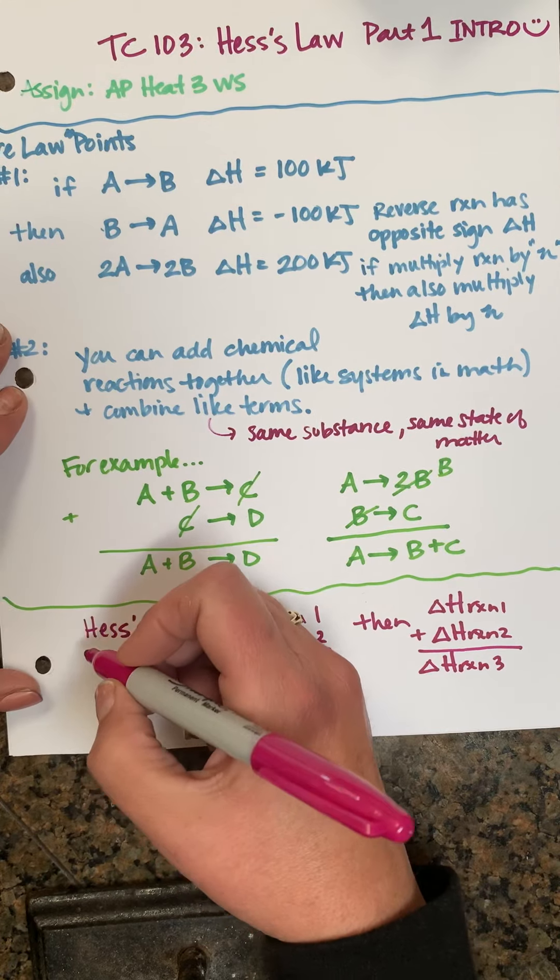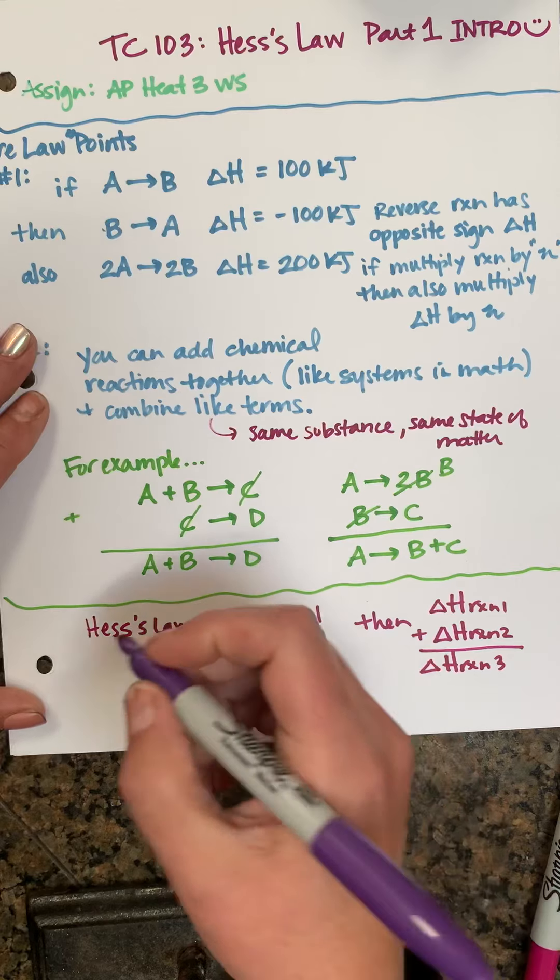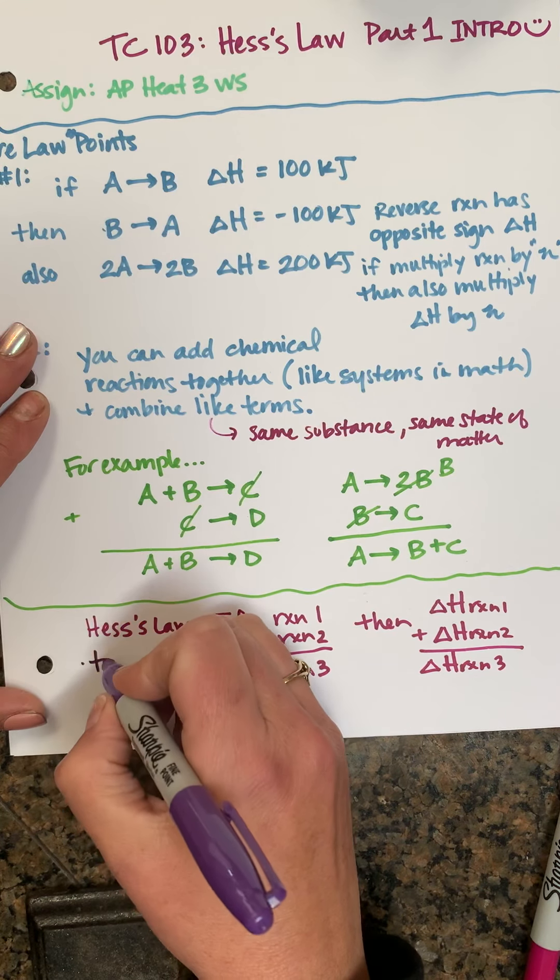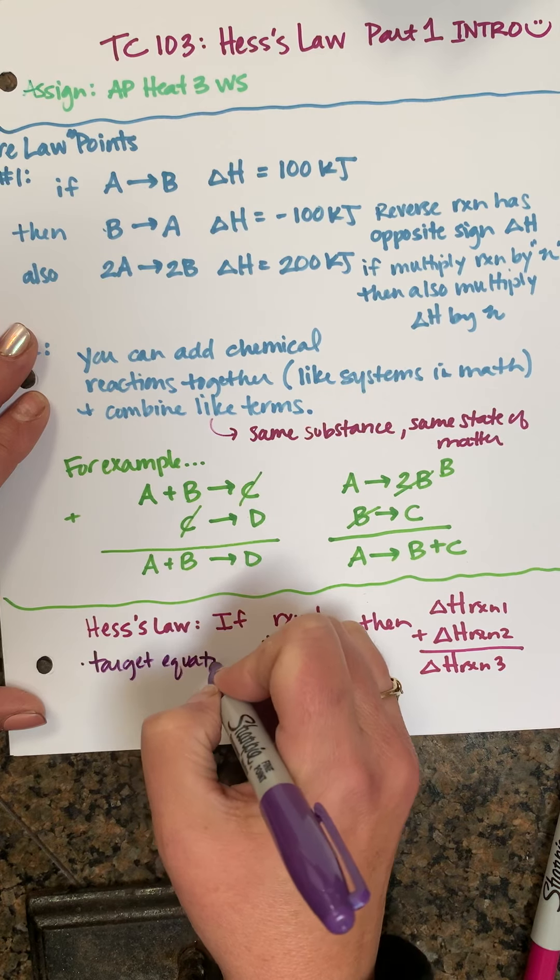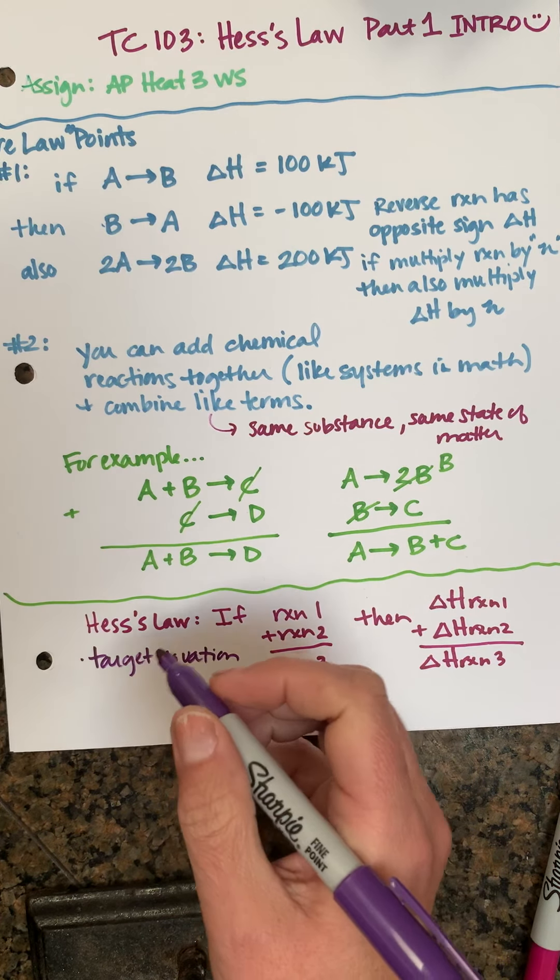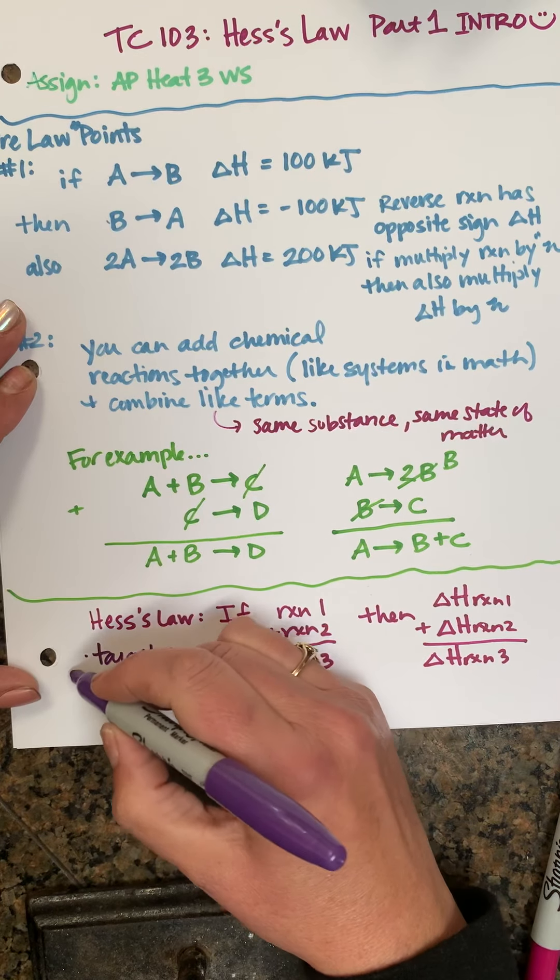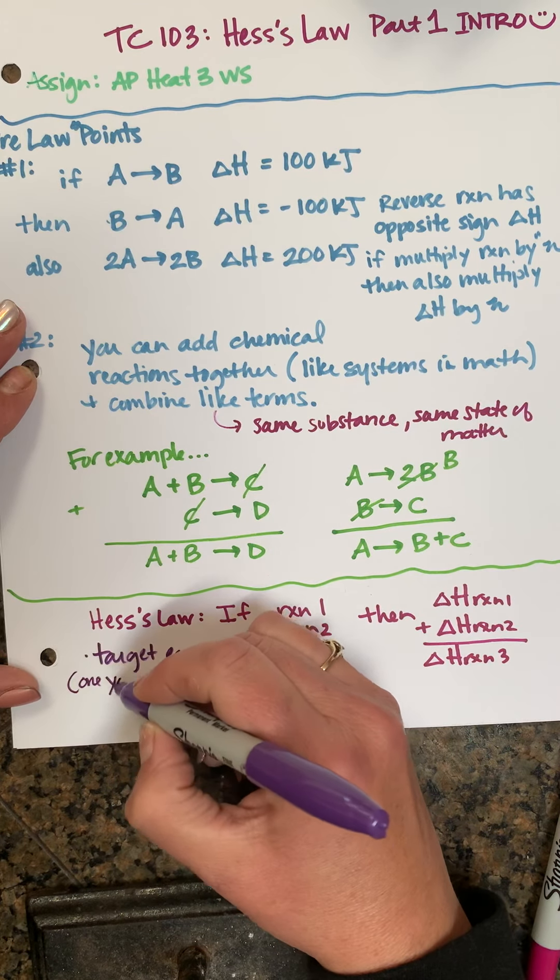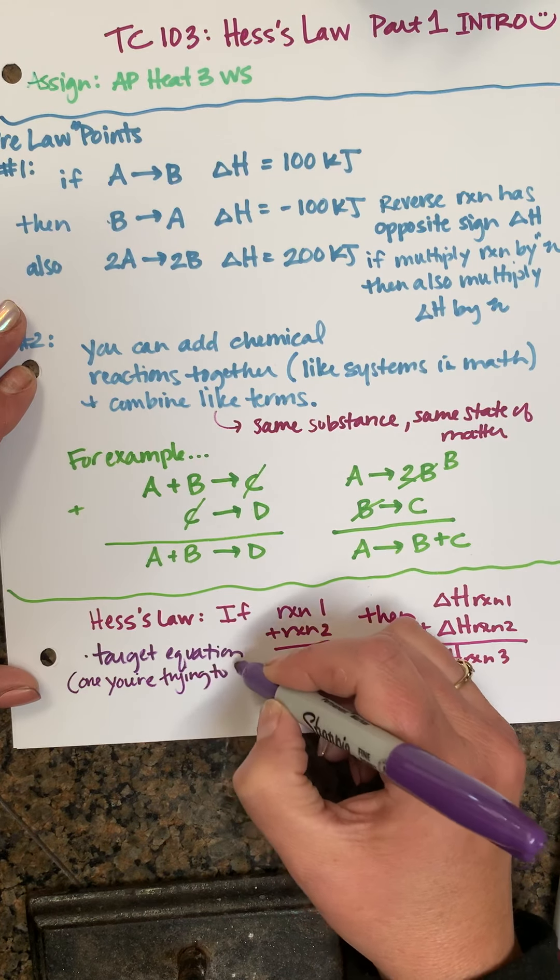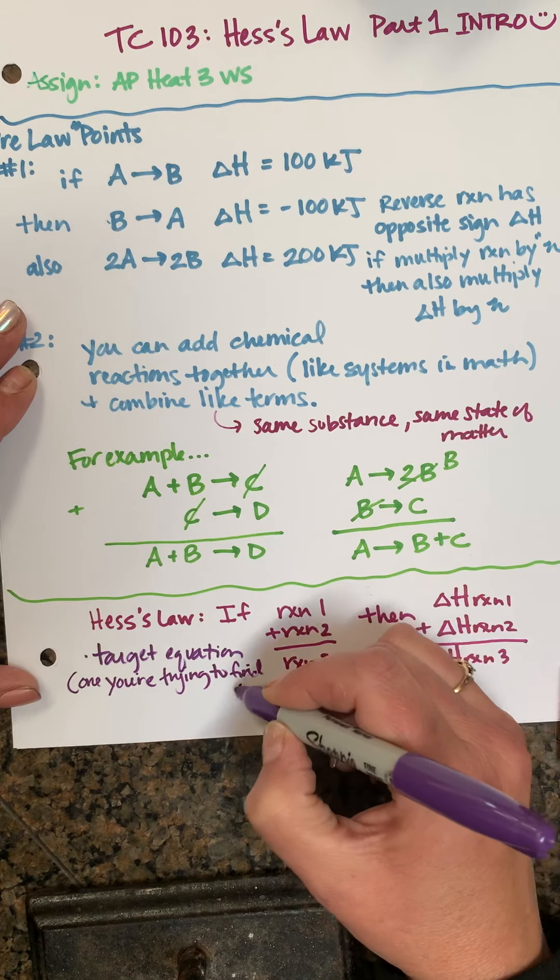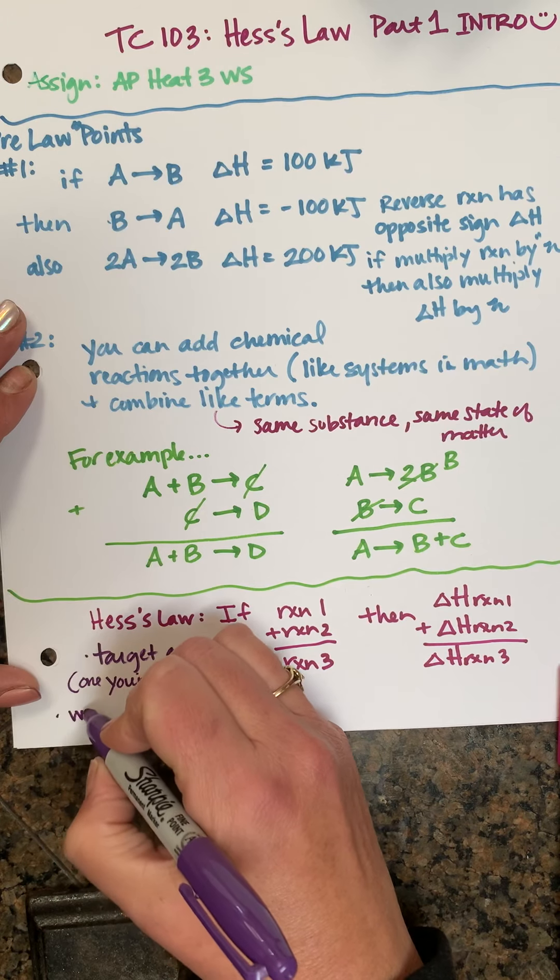Okay, so things that you want to remember when you're working with Hess's Law is that you have a target equation. So the target equation is the one you're trying to find, the one you're trying to find the ΔH for.